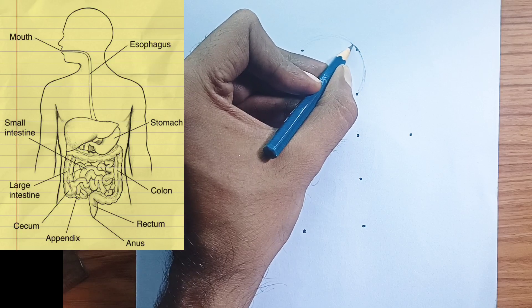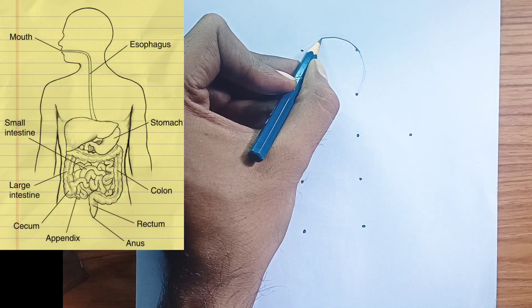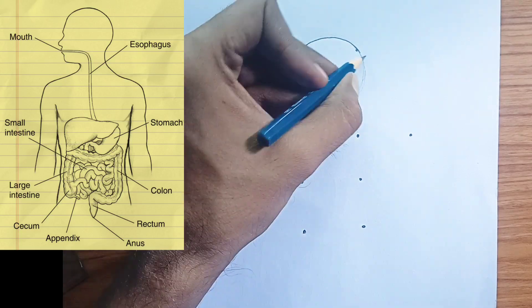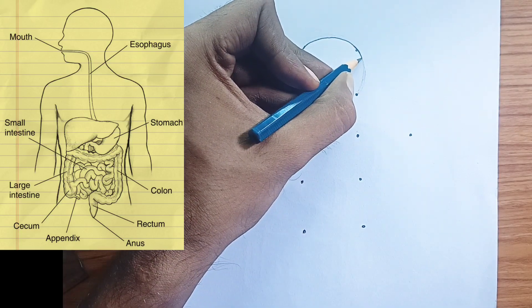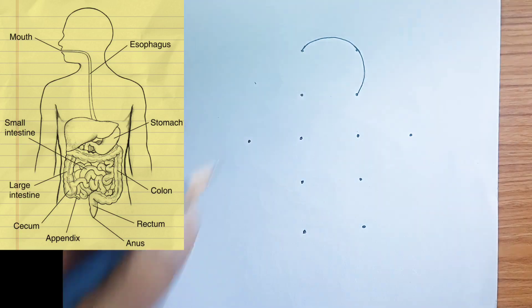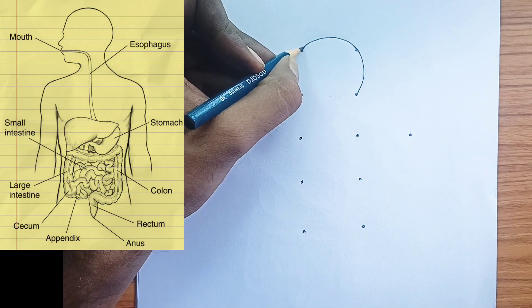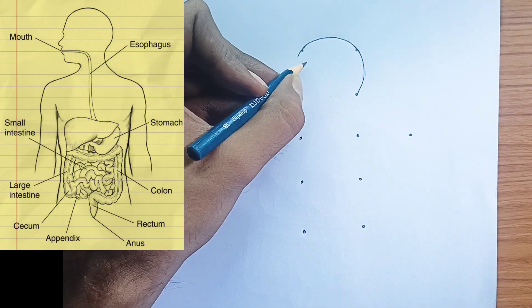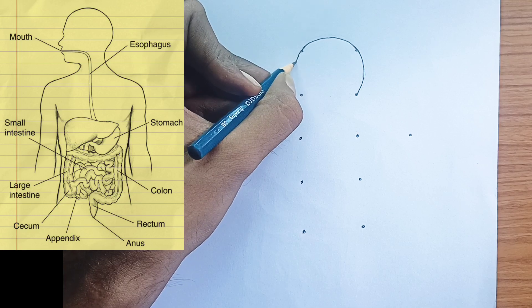Mouth: the starting point of the digestive system. Here, food is chewed — mechanical digestion — and mixed with saliva. Chemical digestion begins with enzymes like amylase.